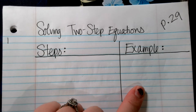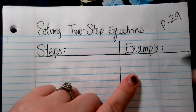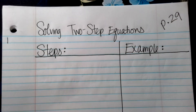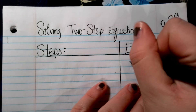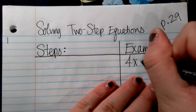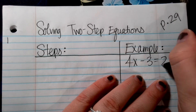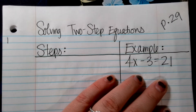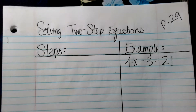Our example is going to be 4x minus 3 is equal to 21. So: 4x minus 3 equals 21.